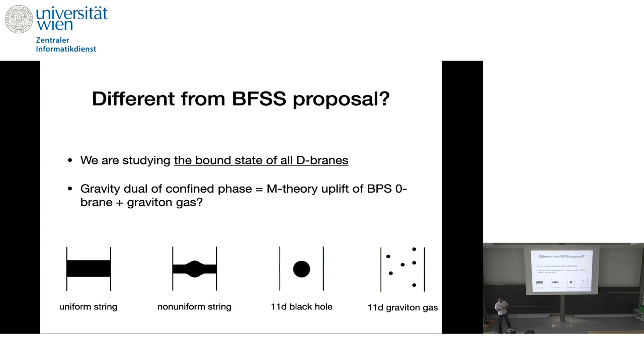And if energy becomes, so ground state should be BPS black zero-brane, or its M-theory uplift. And the candidate, if gravity dual exists for confined phase, what we can imagine is a graviton gas in 11 dimension added to M-theory uplift of BPS zero-brane. Okay, because energy is zero. Because if we have black hole, energy is still not zero.